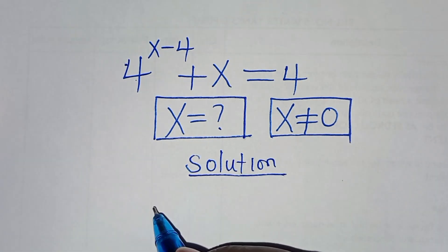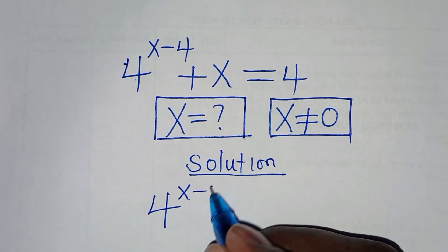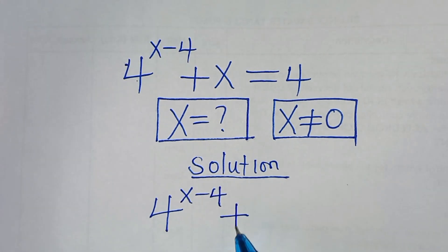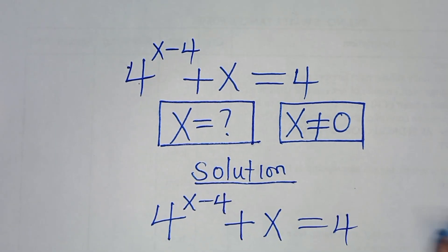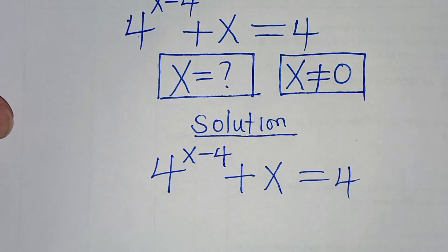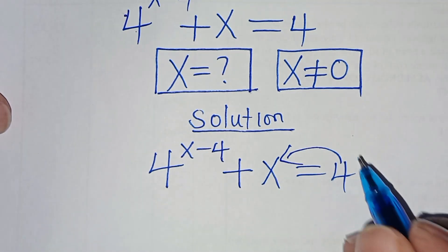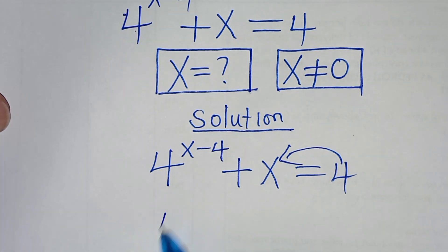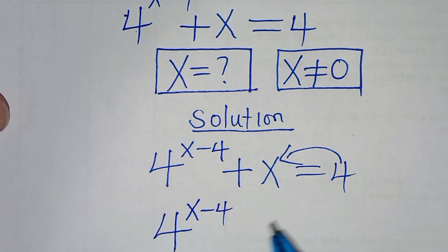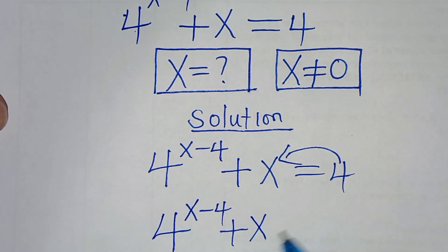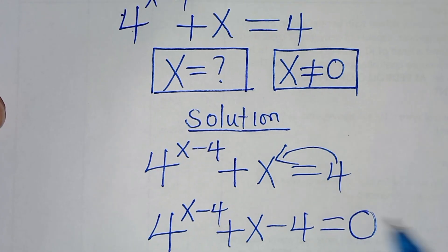We have 4 to the power of x minus 4, then plus x, this is equal to 4. The first step is to take 4 on the left hand side, so that now we have 4 raised to the power of x minus 4, then plus x minus 4, this is equal to 0.